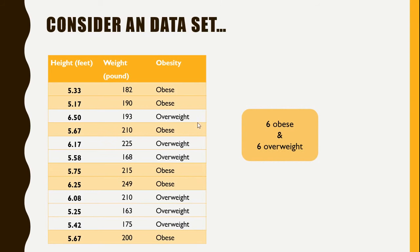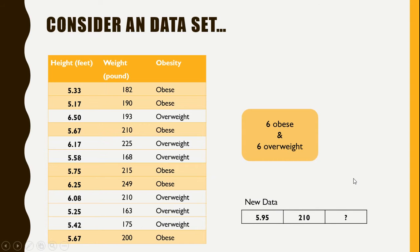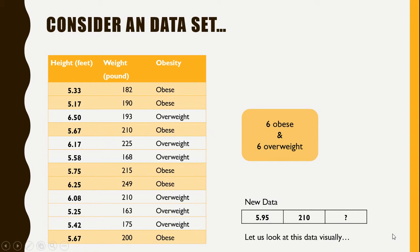In this dataset, we have six observations labeled as obese and the remaining six labeled as overweight. Now, if I am given new data containing height and weight and I am asked to classify it as obese or overweight — assume that we do not know how to calculate the body mass index, and all we have to do is classify based on the information given in the dataset. One thing we can do is plot these points visually and see where the new point is located in the two-dimensional space.